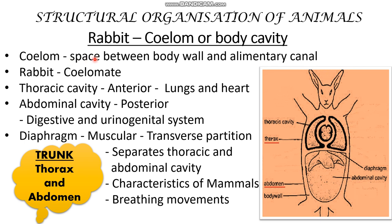Coelom is the space between the body wall and the alimentary canal — that is, the digestive system. It starts from mouth to anus. If you look at this diagram, the space between the body wall and the digestive system is what we call coelom.